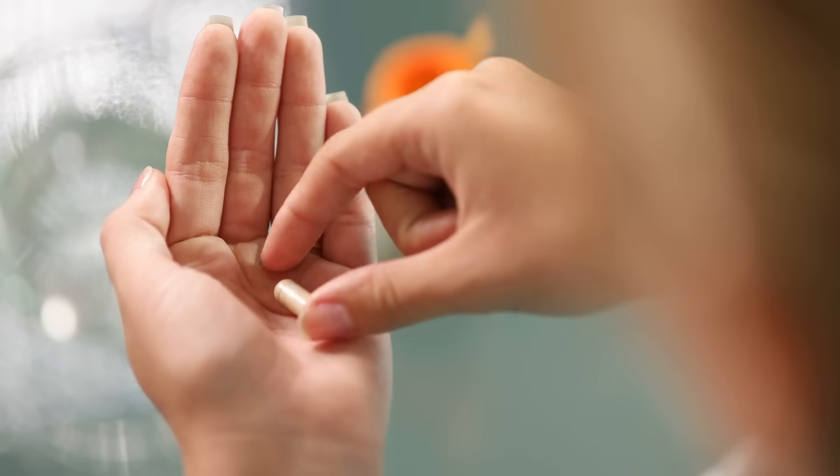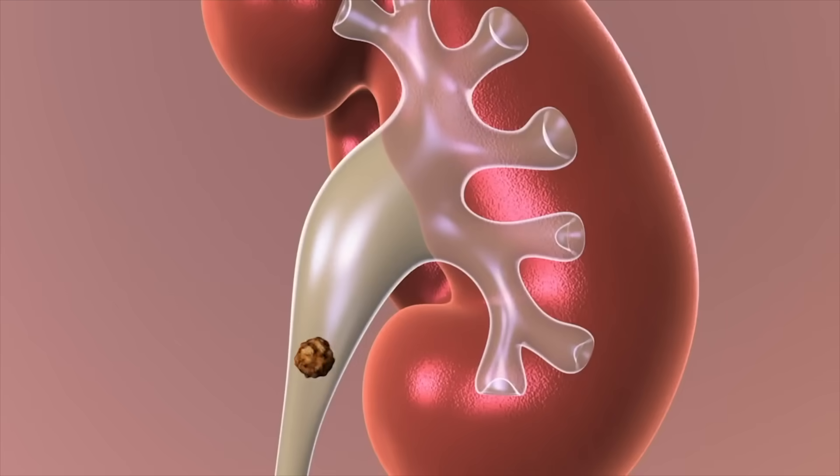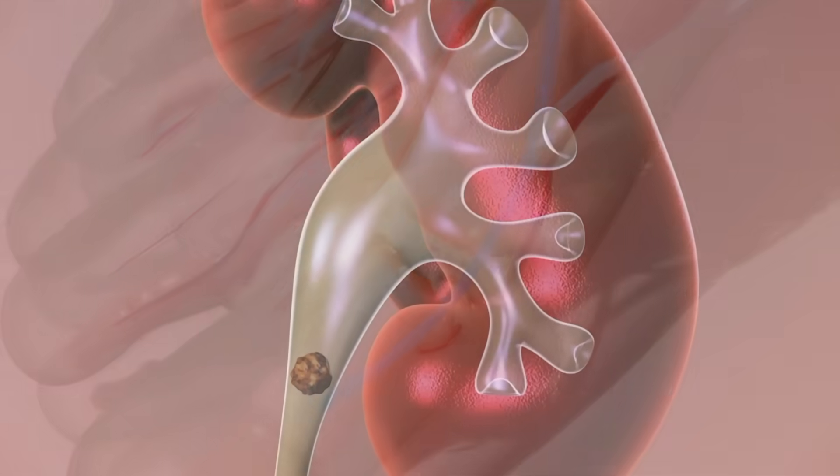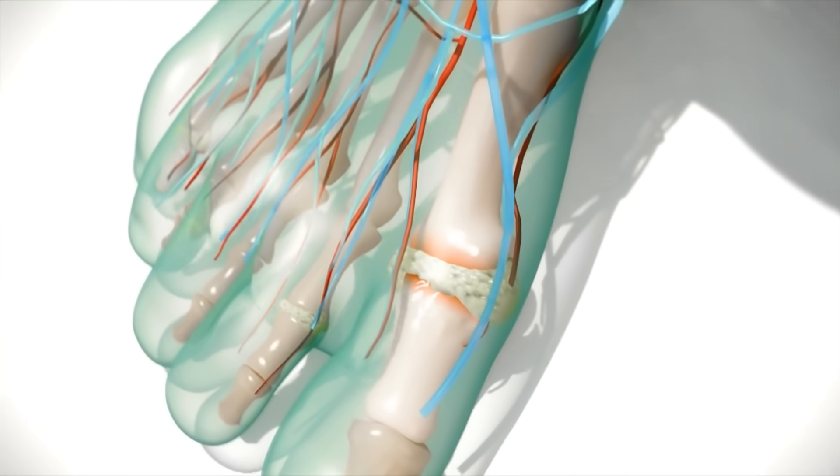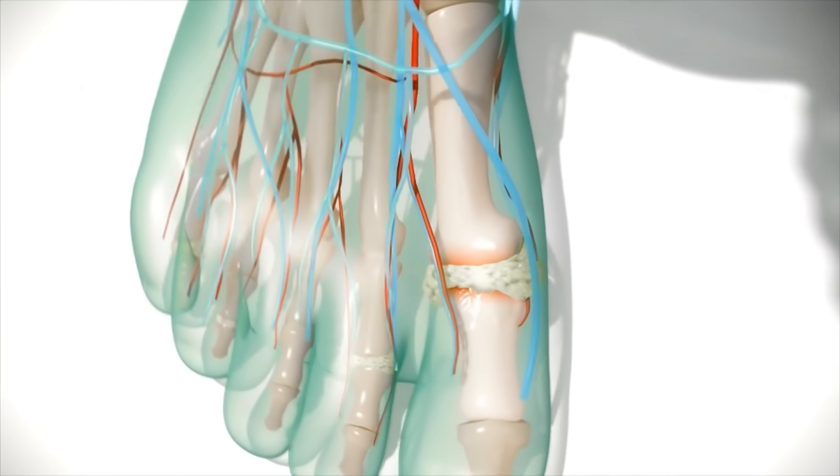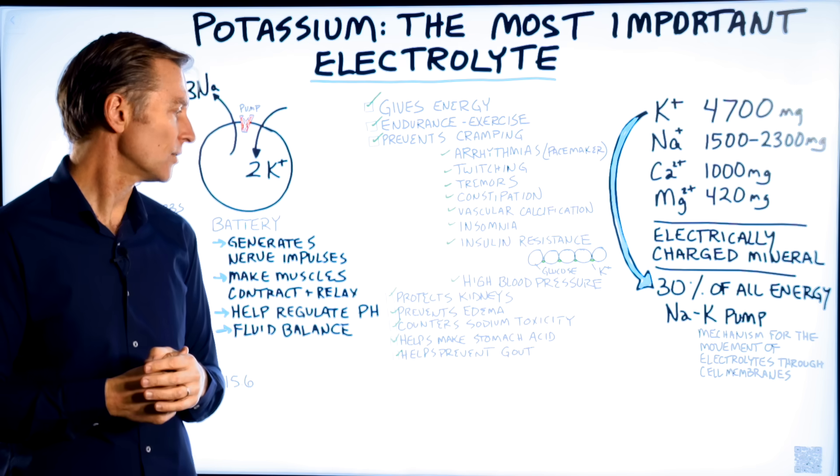In fact, potassium citrate is good for preventing kidney stones. It's also good to prevent gout, which is uric acid crystals. So potassium is actually very, very good for a lot of different things.